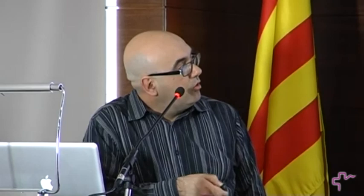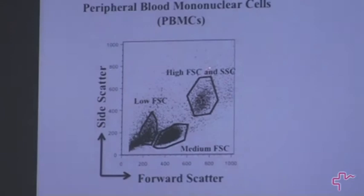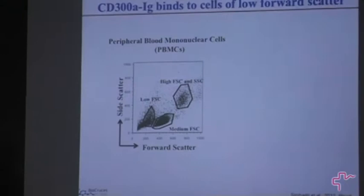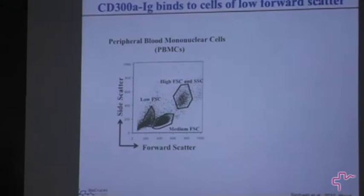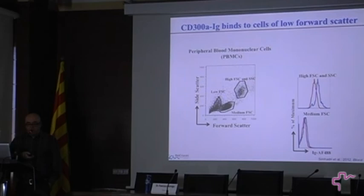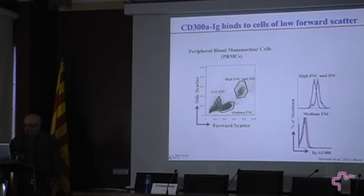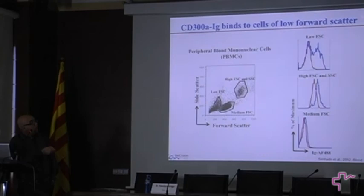Looking at peripheral blood mononuclear cells, you see cells with high forward and side scatter — mostly monocytes — here are lymphocytes, and cells with low forward scatter are dead cells. What he realized is that the lymphocyte population does not bind CD300A, meaning those cells do not express the ligand. Monocytes bind a little bit, but importantly, what he found was that cells with low forward scatter — dead cells — bind very nicely to this protein, suggesting that the protein is recognizing something expressed on dead cells.